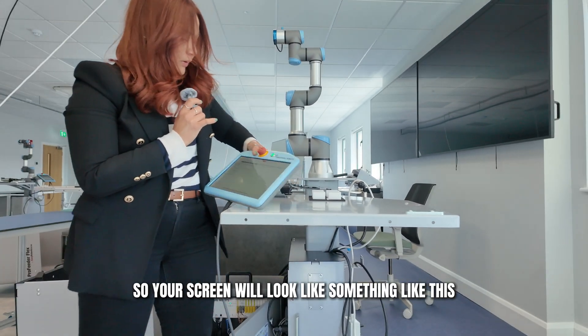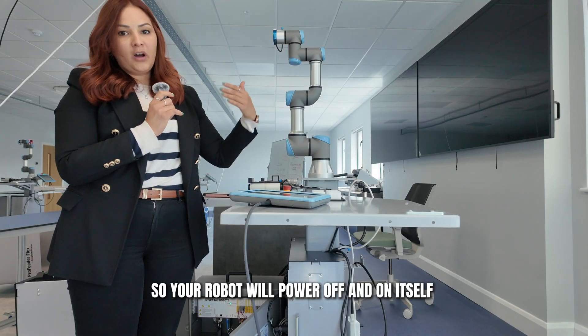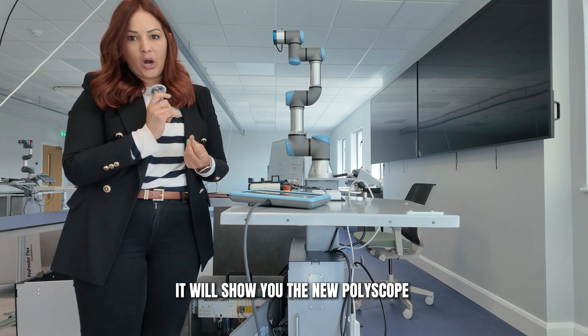So your screen will look something like this. Your robot will power off and on itself, and then when it finishes, it will show you the new Polyscope.